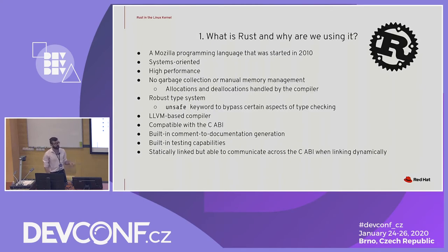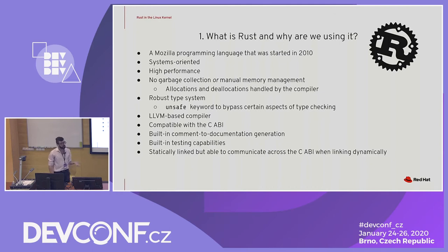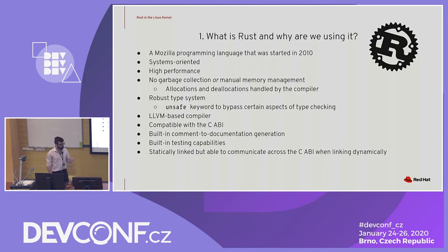What is Rust and why are we using it? Rust is a highly systems-oriented programming language — very high performance. Started around 2010, it's made a lot of headway. We get benefits like no garbage collection or manual memory management; allocations and deallocations are handled by the compiler. It has a robust type system, is LLVM-based for nice optimizations, and comes with out-of-the-box documentation and built-in testing capabilities, making it a very attractive option.